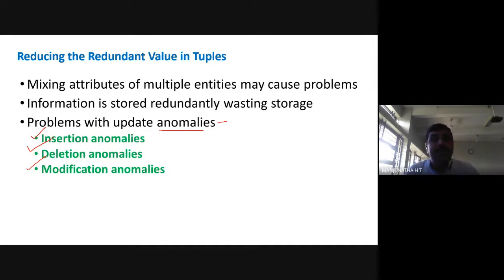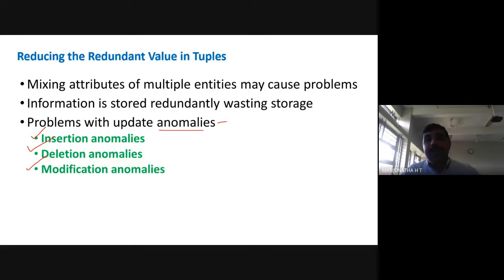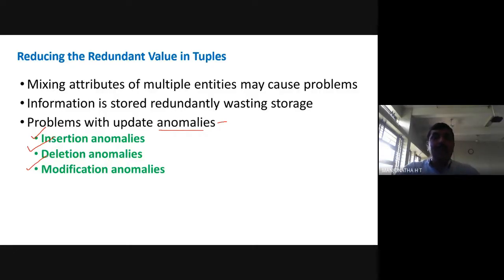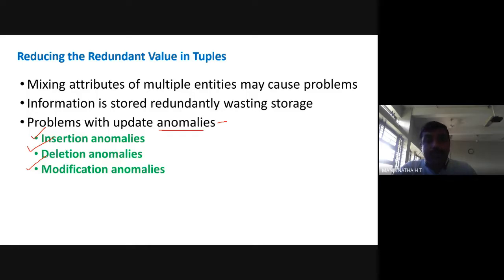These three types of anomalies are generated whenever we have multiple records with the same value. If you insert the same record multiple times, anomalies are generated and errors occur. You have to reduce these redundant records. We need to avoid insertion, deletion, and modification anomalies. These anomalies will be discussed in the next class.